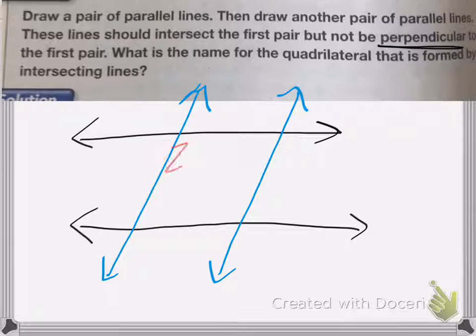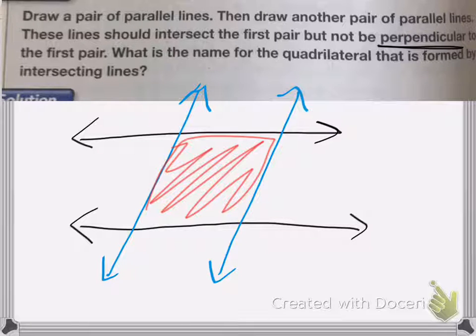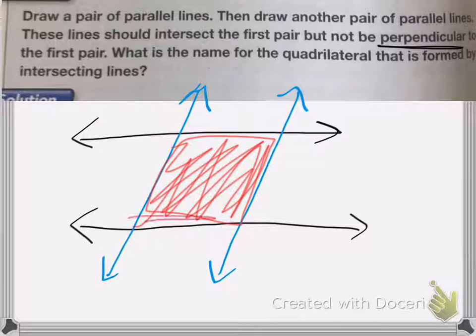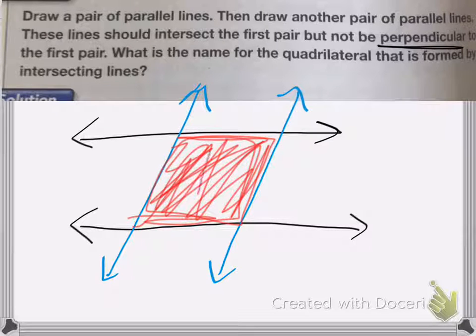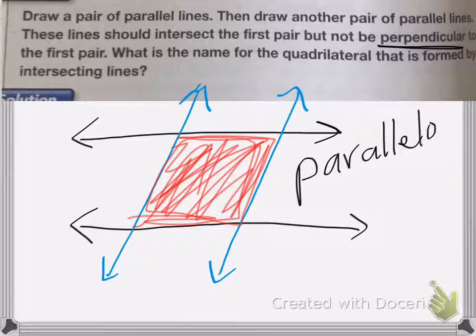And then it wants to know what this shape I just drew is. So I have two pairs of parallel lines, so my shape is a parallelogram. Oops, ran out of space. Gram.